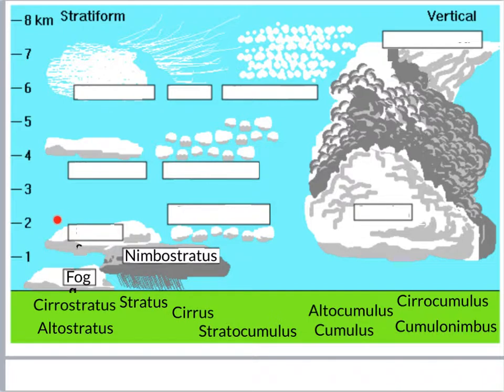Next, the one just above nimbostratus. It is sort of flat and low-lying, so that would be stratus. It is not raining, so just a stratus cloud.